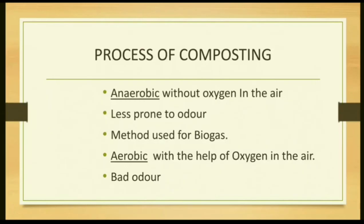Process of composting includes two methods: anaerobic and aerobic. Anaerobic means without oxygen — all waste material is dumped underground and covered with soil to prevent bad odor. Like in a biogas tank, cow dung is put in and covered so there is no foul smell; the gas produced can be used for cooking or lighting, and it contains about 55% methane and 45% carbon dioxide.